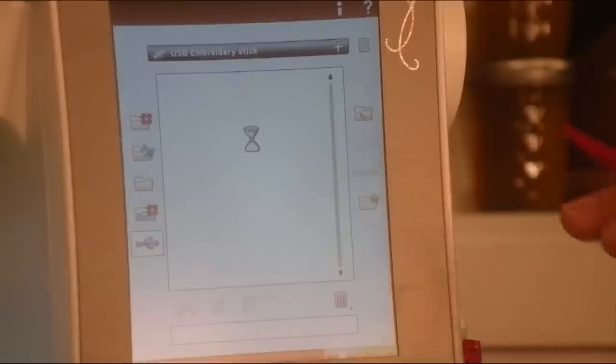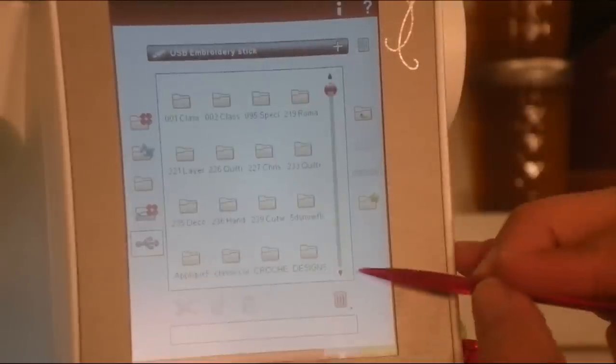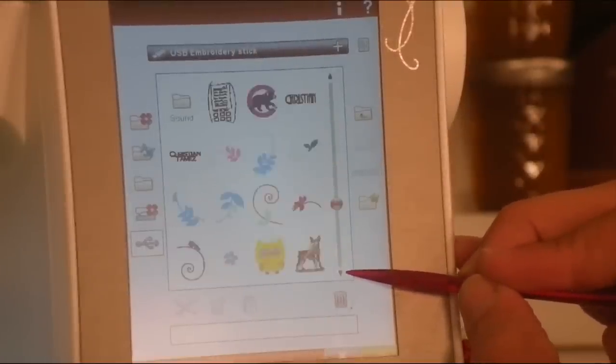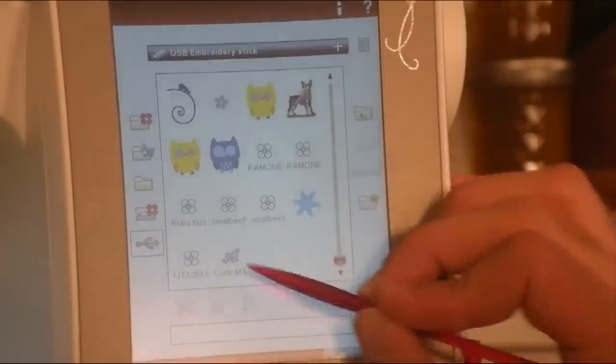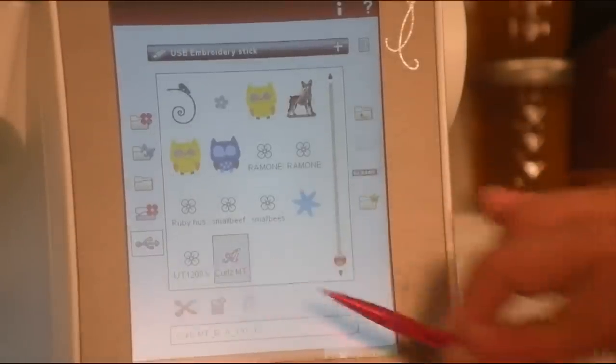Instead of going to the fonts, I'm going to go into the folder and choose your USB option. There's your memory stick. Click the open icon, wait for it to open, and scroll down until you find your file. There it is, Curls MT. You can see the outline font, so just go ahead and press OK.